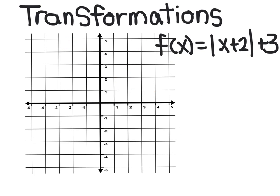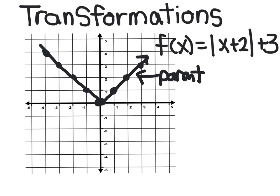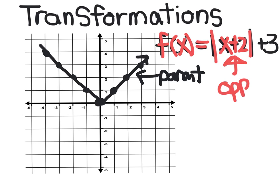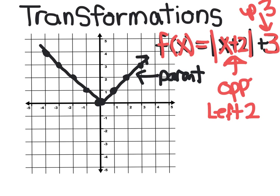For an absolute value graph, the parent function passes through 0,0 and 1,1 and 2,2, bouncing off the x-axis since it can't be negative. To graph f of x equals the absolute value of x plus 2, plus 3: the x plus 2 is inside the absolute value, so it moves the opposite way — to the left 2. The 3 is after the function and moves the same way you think, so it moves up 3. The vertex shifts from 0,0 to negative 2, 3, and the same graph shape is drawn at that new position.